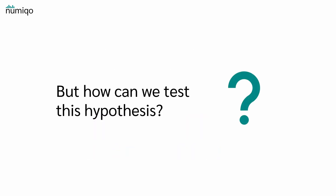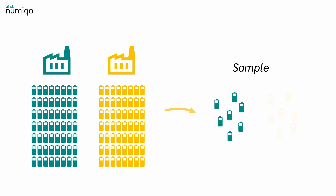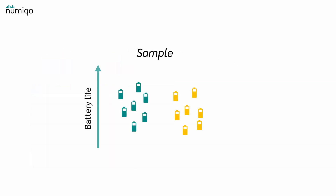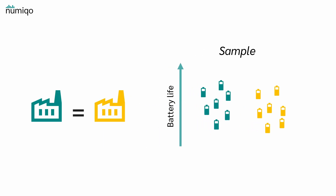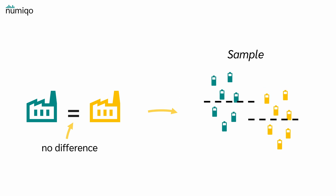But how can we test this hypothesis? We can't measure the battery life of all produced batteries, so we take a sample from Factory A and a sample from Factory B. Now we can measure the battery life of the sampled batteries. Keep in mind that we assume both factories produce batteries with the same average battery life — that is our null hypothesis. But even if there is no true difference between the two factories, it's unlikely that we draw two samples with exactly the same average battery life. Purely by chance, one sample will likely last a bit longer than the other.